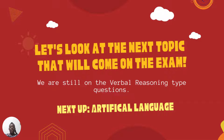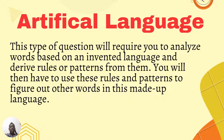Now, let's look at the next topic that will come on the examination. This is the final topic we're going to be looking at for this part of the ability test video, from the verbal reasoning category. We have the artificial language. In this type of question, we will be required to analyze words based on an invented or made-up language. We're going to be deriving particular rules and patterns from these languages, then use these rules and patterns to figure out other words in this artificial language.